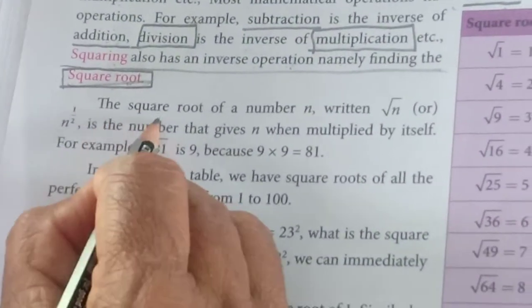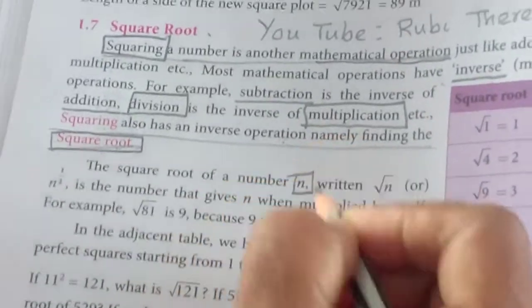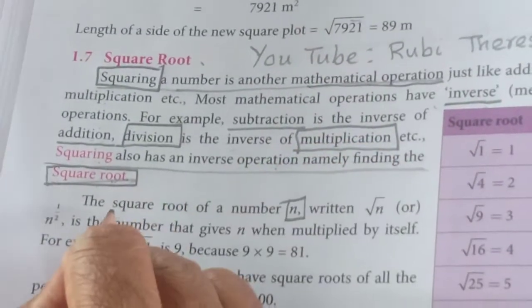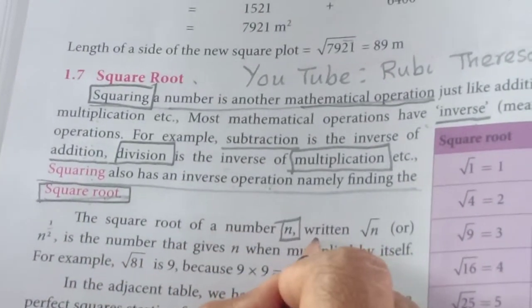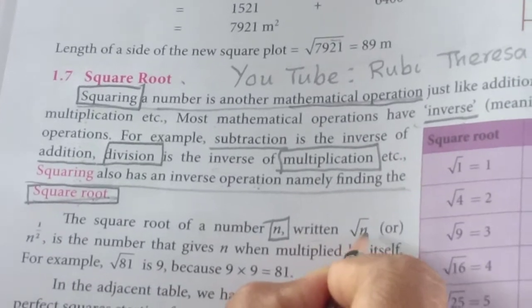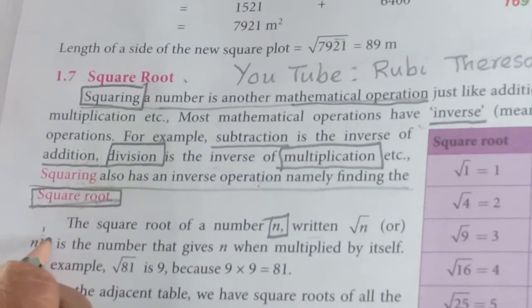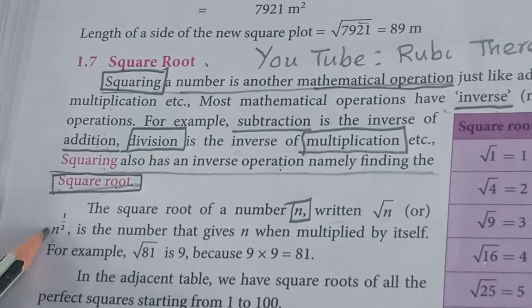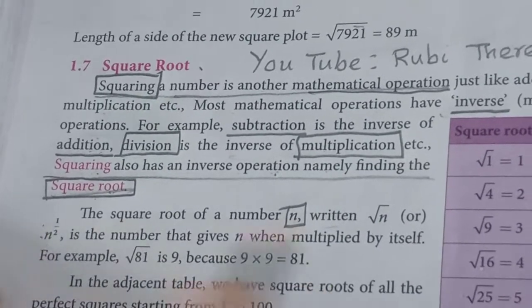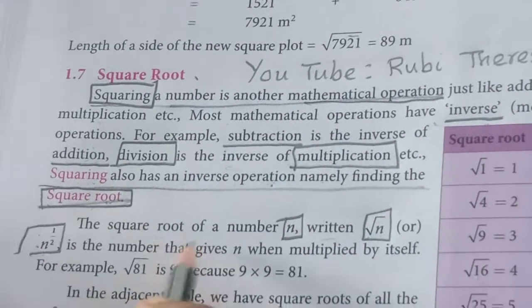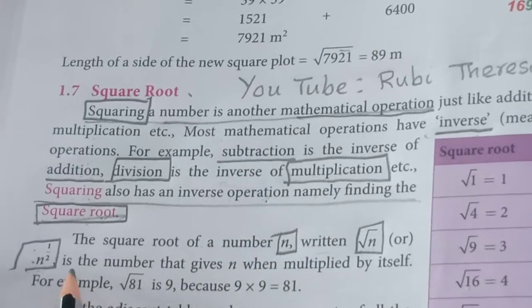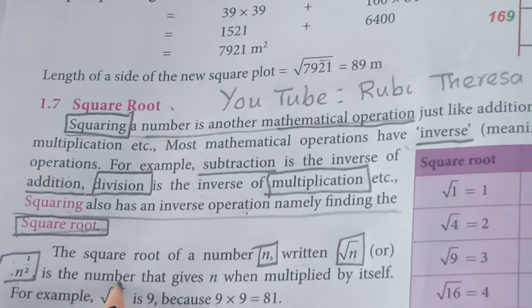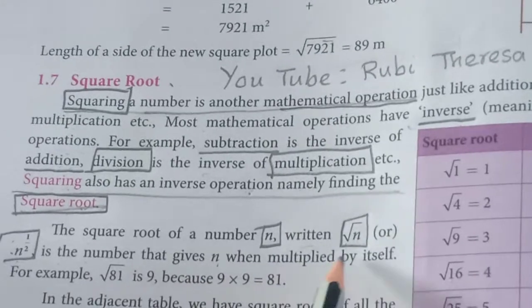The square root of a number N — this is a general form. Instead of a number they have represented it as N. The square root of a number N, written as root N, can also be written as N to the power of half, or N to the power of 1 by 2. The square root of a number N written as root N is the number that gives N when multiplied by itself.